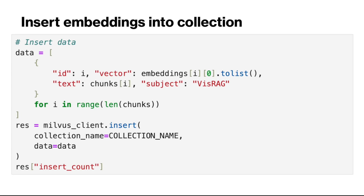After that, we can insert the chunks and their embeddings into the collection. First, we reformat our data such that we have a list of dictionaries. Each dictionary contains an ID, which is a unique identifier for the chunk, the embedding vector given as a Python list, and finally the actual text of the chunk. Then we insert the data into our collection.